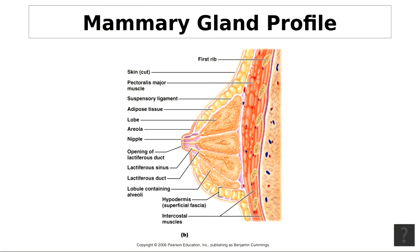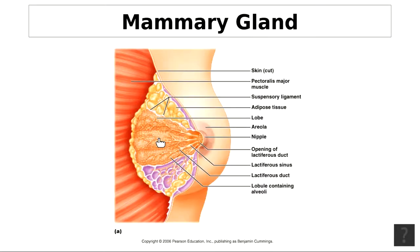Mammary glands are modified sweat glands that produce milk for nourishing offspring. They contain 15 to 20 lobes, and the lobes contain milk-secreting cells called alveoli — A-L-V-E-O-L-I. Each lobe is made up of smaller lobules. The alveoli drain into a series of ducts: the lactiferous sinus, lactiferous duct, and the opening of the lactiferous duct.